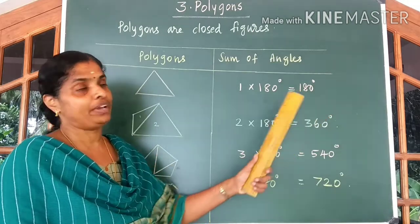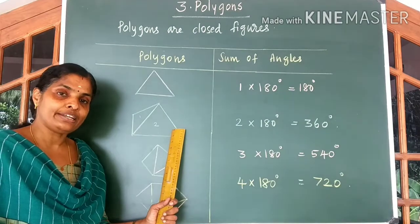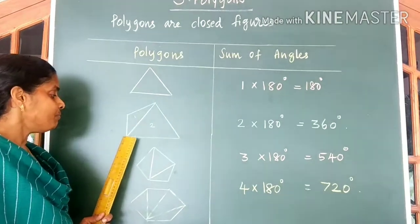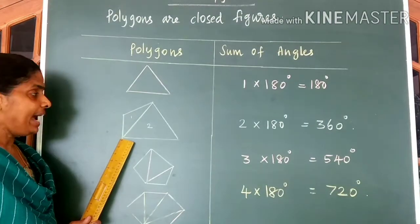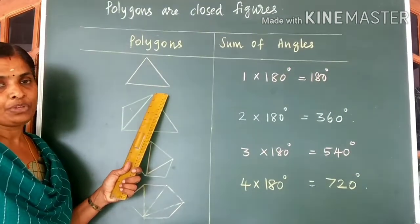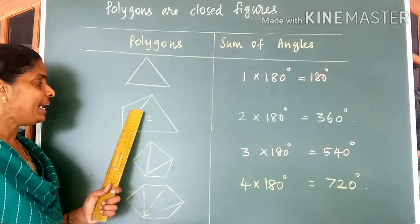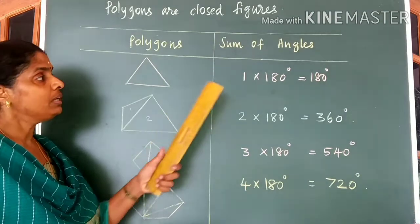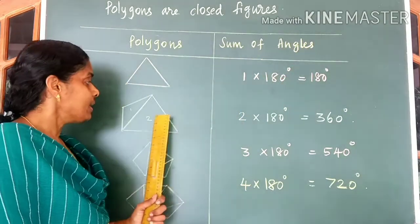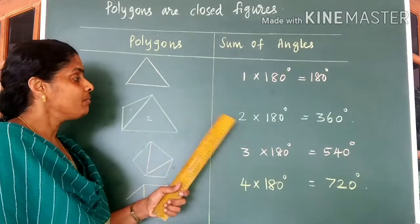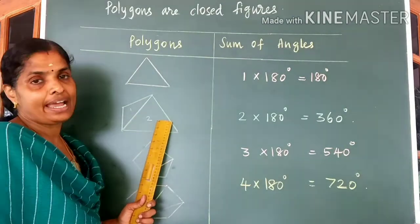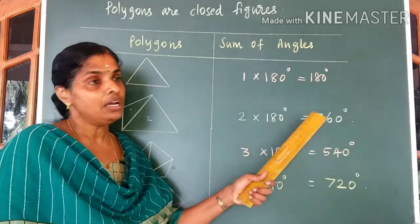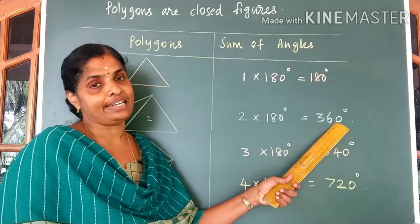A four-sided closed figure is called a quadrilateral. From one of the vertices, I have drawn a diagonal so that the quadrilateral is divided into two triangles. So the sum of angles of a quadrilateral is 2 into 180 degrees, which is equal to 360 degrees.